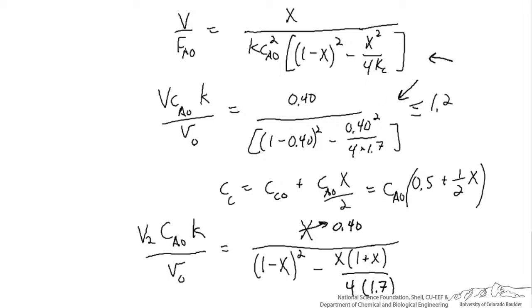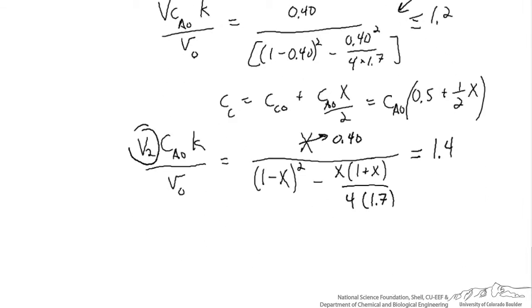This 1 is coming from the fact that we're feeding half a mole per liter of C in with the reactant stream. We can plug in the value of 0.4 and solve for this Damköhler number. Note that I've provided a subscript 2 for this V2. The volume of the reactor now is going to have to be different. It will turn out it will have to be greater because the Damköhler number equals 1.4. The original value of the Damköhler number was equal to 1.2.